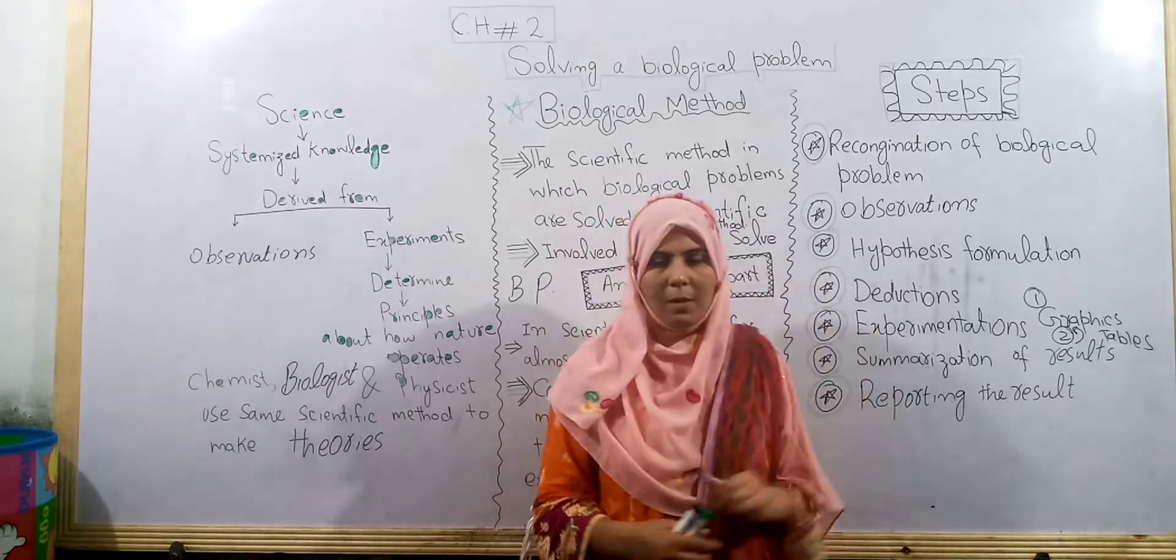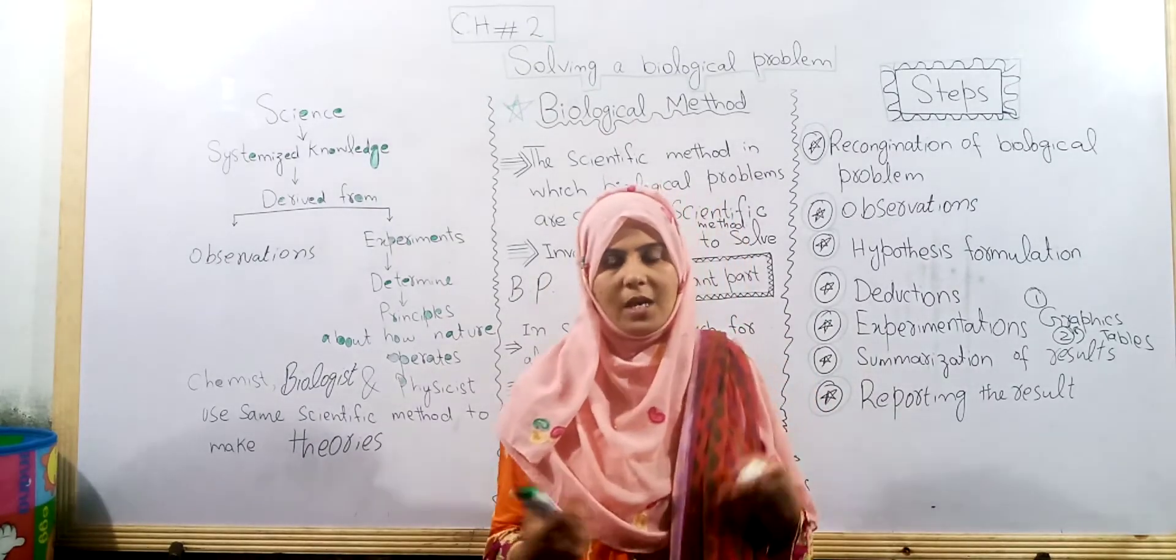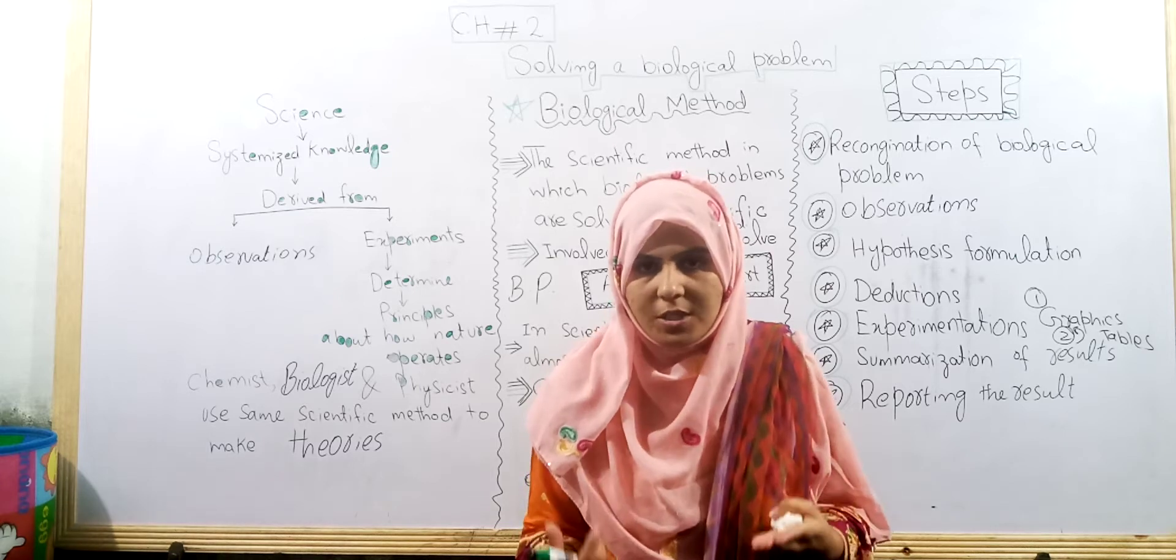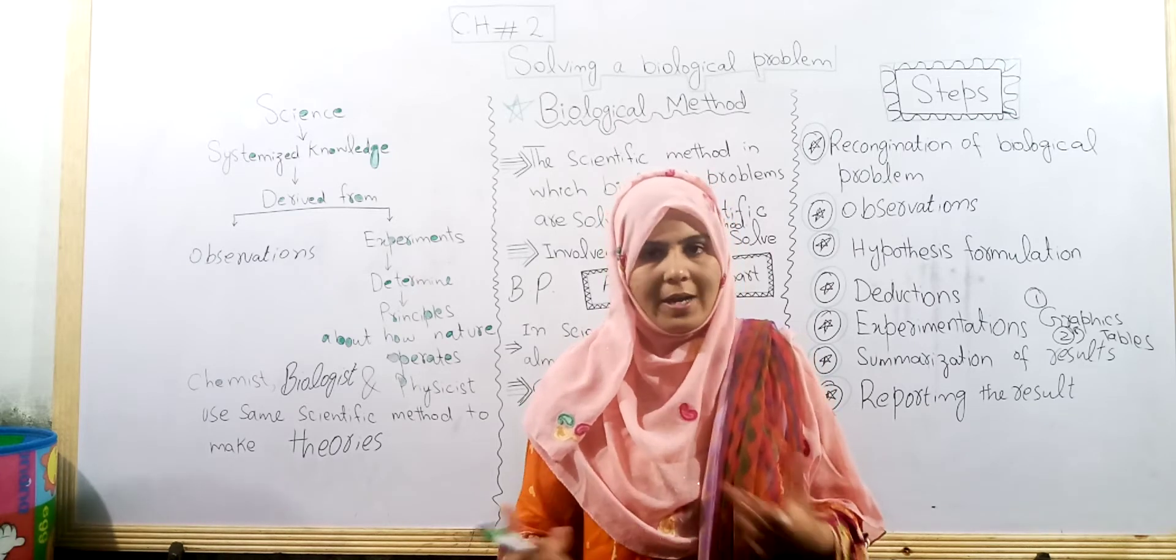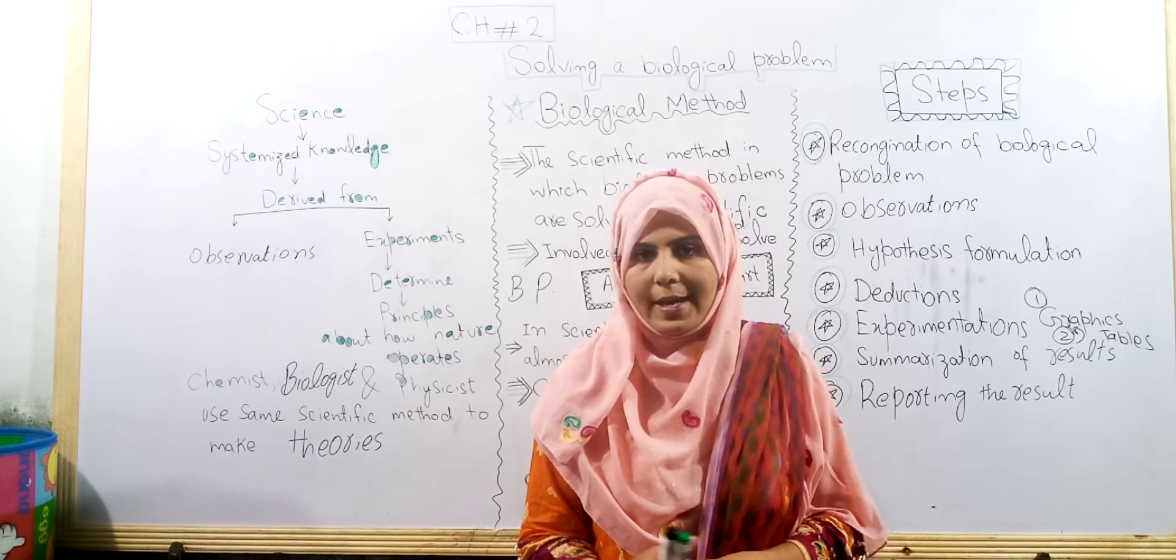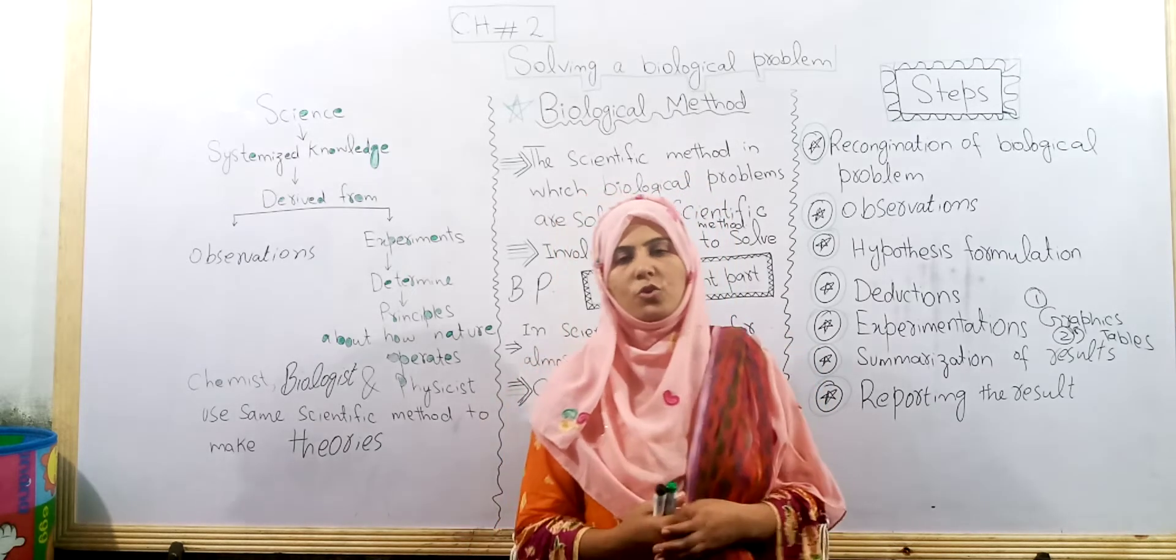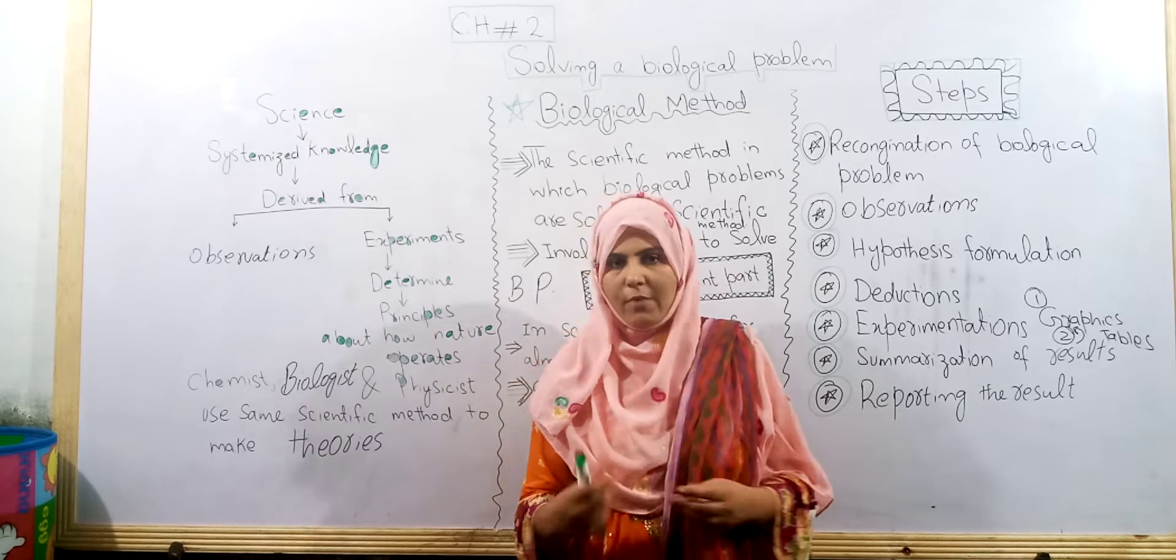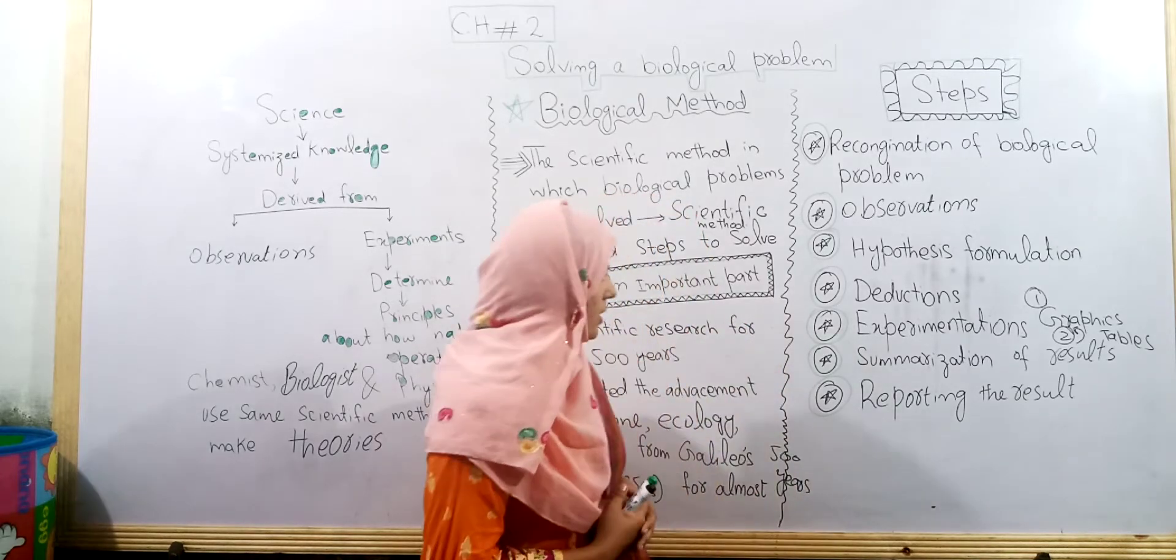Next, we observe that in Faisalabad hospital, random observations show that diabetic patients are at 40 and above age and at least in low age. For example, this is our observation.